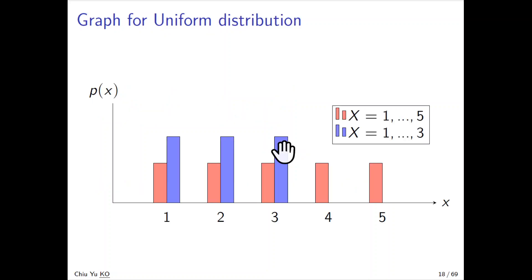An example of a probability distribution function: if x can be one up to five, you will see it's 0.2, 0.2, 0.2, 0.2, 0.2 for each. If there are three outcomes, it will be one-third, one-third, one-third. So this is a uniform distribution.